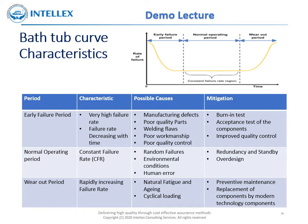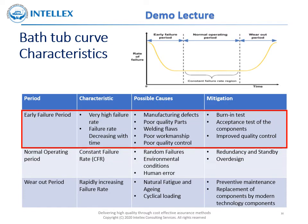The characteristics of the bathtub curve, causes, and possible mitigations for its different periods are shown in the table. The first period is the early failure period. Its characteristics are a very high failure rate, but decreasing with time. The possible causes are mainly manufacturing defects, which may be caused by poor quality parts, welding flaws, poor workmanship, and poor quality control.